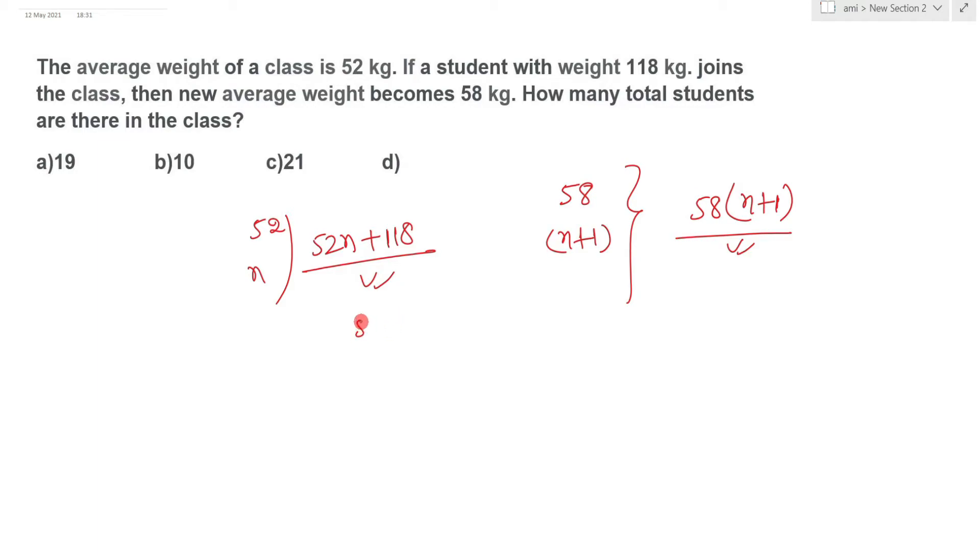So simply you will write: 52n plus 118 equals 58n plus 58.